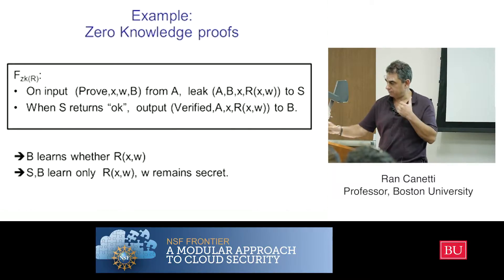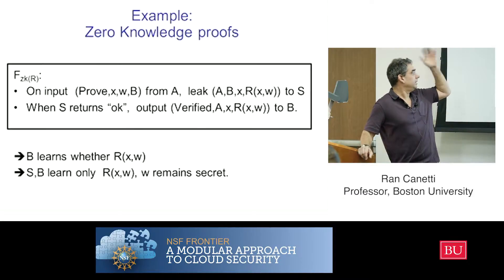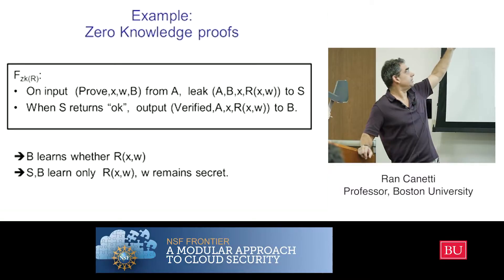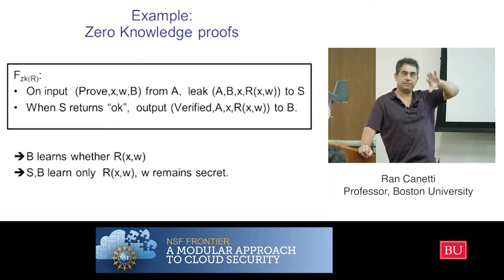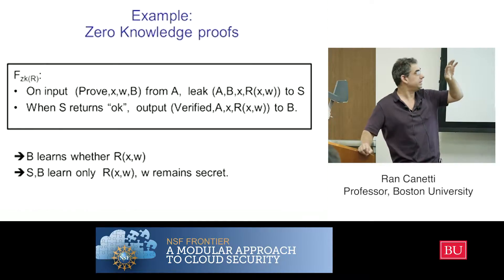Zero knowledge—I didn't go into this before, but just to give an idea, no need to get too deep. So what's zero knowledge? The functionality for two parties, there is a prover and verifier. They both have a common input, x. And the prover has some secret value, w, it's called a witness.